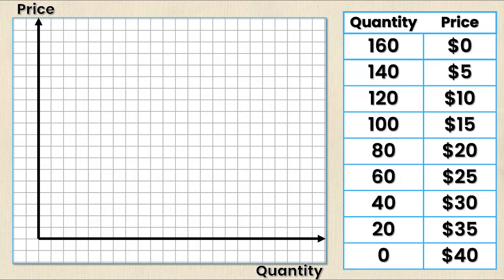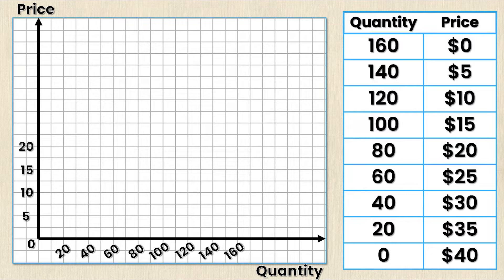Next I need to put some values on the axes themselves. At the origin I'm going to put zero because the lowest quantity in my table is zero and the lowest price in my table is zero as well. I'm going to plot all of the quantities and prices from my table on the graph. My quantities go up on a scale of 20 and my price goes up on a scale of 5. All of these numbers are simply taken from my demand schedule.